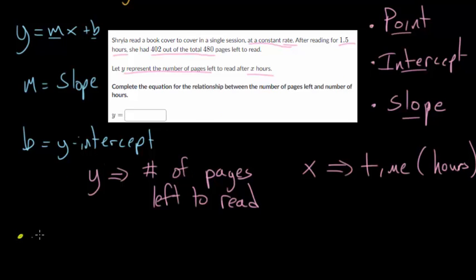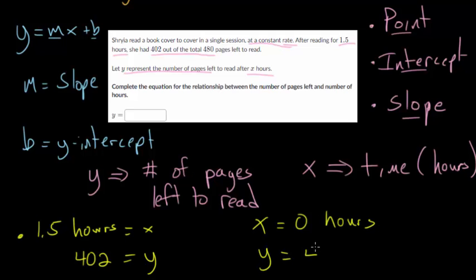We know that in 1.5 hours, so that's our x, that y, the number of pages left to read, would be down to 402. And we also know that since there was a total of 480 pages to read, and she's trying to read it in a single session, we know that when the time was 0 hours, she had 480 pages left to read. So let's say when x was 0, so 0 hours before she started reading, that she had 480 pages left to read.